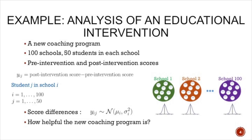Let's look at a hypothetical simple example of an educational intervention. Assume that we have come up with a new coaching program, and we implement it in 100 schools, each of which has 50 students. For each student, we record a pre-intervention test score before starting the coaching program, and after the coaching program has ended, we do another test and record those scores as well. For each student, we can compute a difference in score — post-intervention minus pre-intervention — and hopefully these are positive, meaning students have improved.